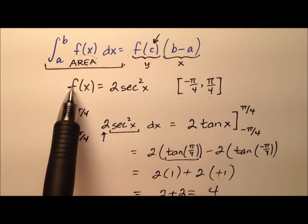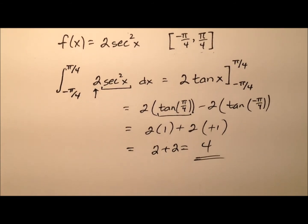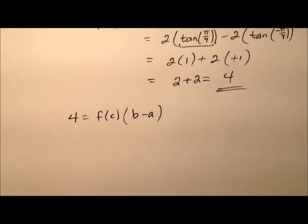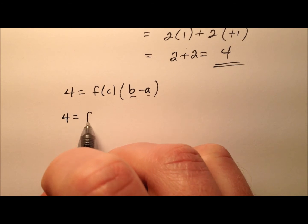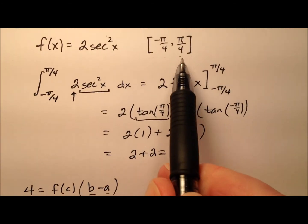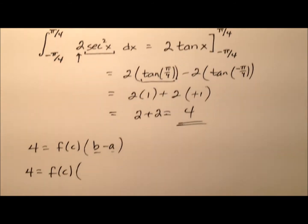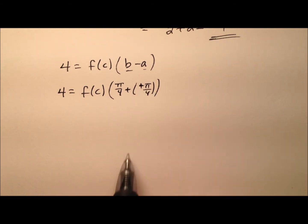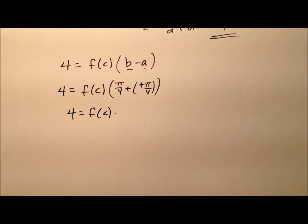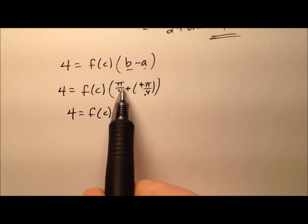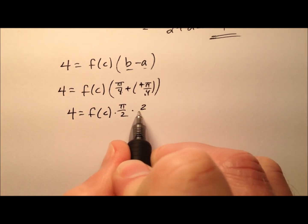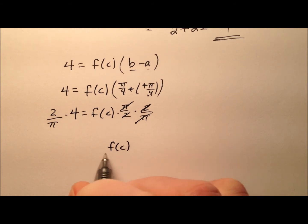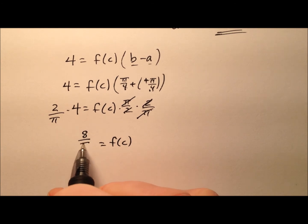So this area equals 4 square units. We're saying 4 equals f of c times b minus a, and the b minus a is pi over 4 minus negative pi over 4. The subtraction and the negative kind of combine, so pi over 4 plus pi over 4 is 2 pi over 4, or just pi over 2. So we multiply both sides by 2 over pi — that cancels the pi's and the 2's — isolating f of c on the right side, which equals 8 over pi.